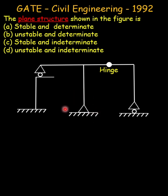The given structure can be divided into two parts. Structure one consists of a cantilever, and the reaction from the roller can be considered as a load. For this structure, Ds (static indeterminacy) equals zero, hence it is stable and determinate.